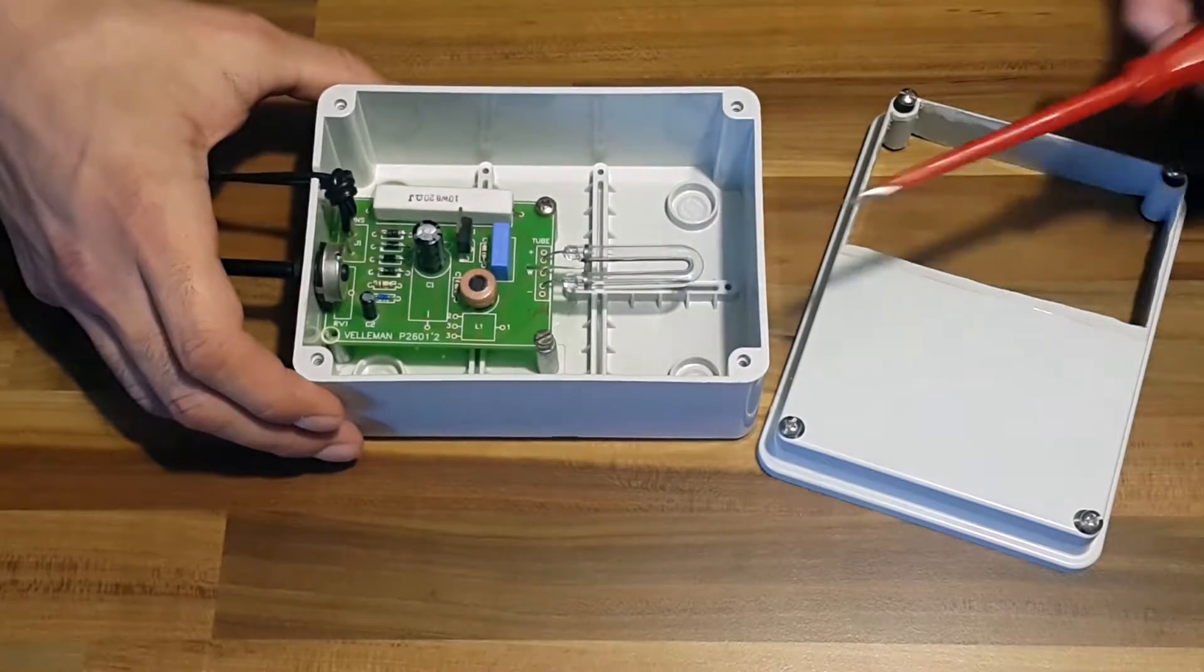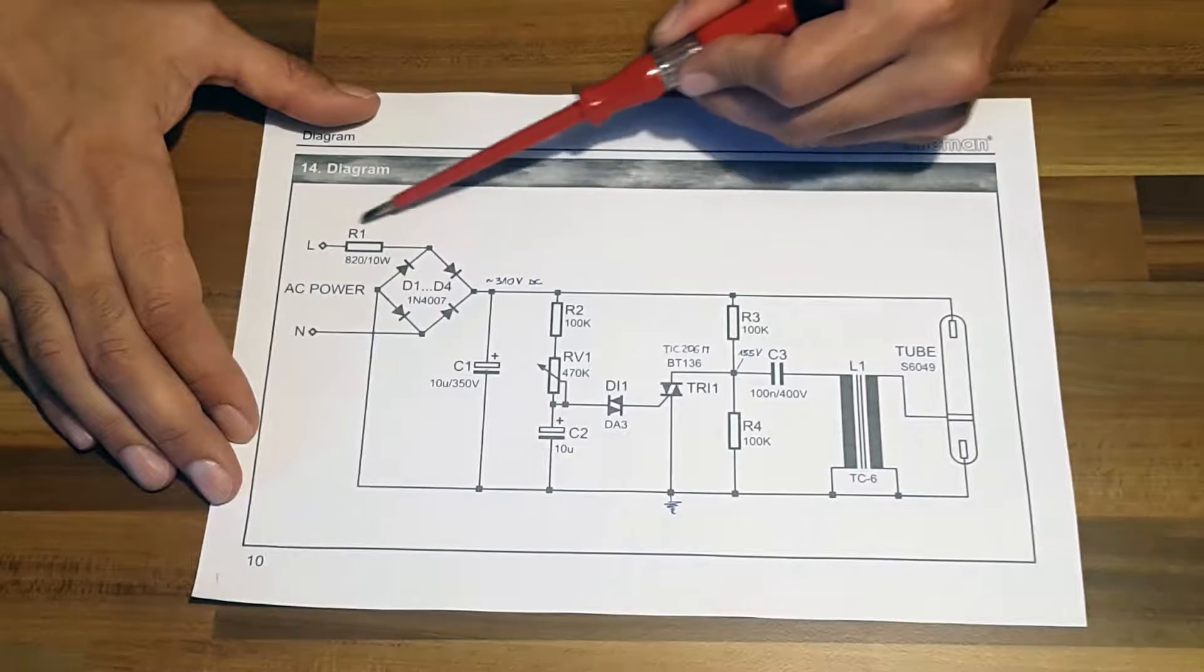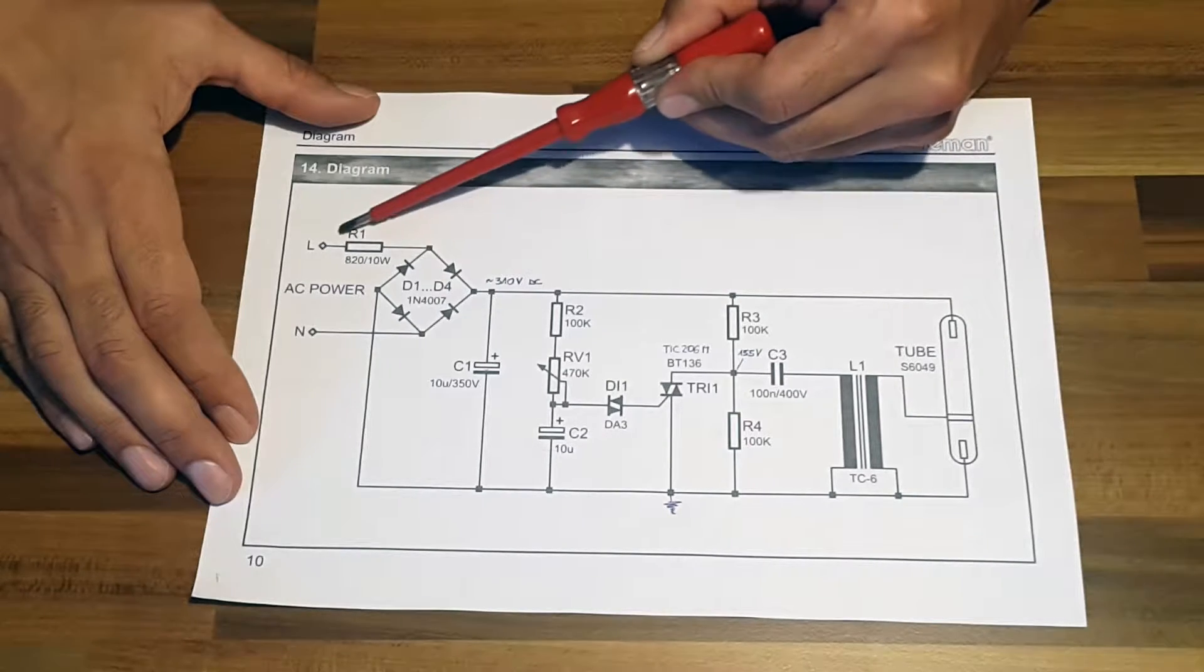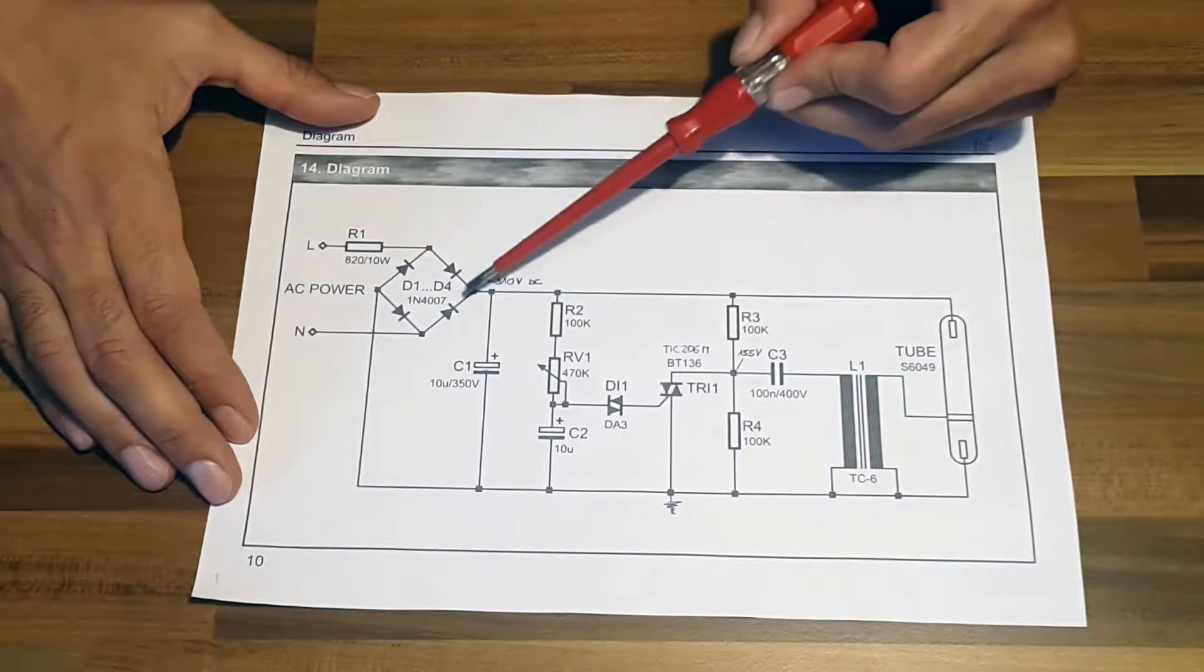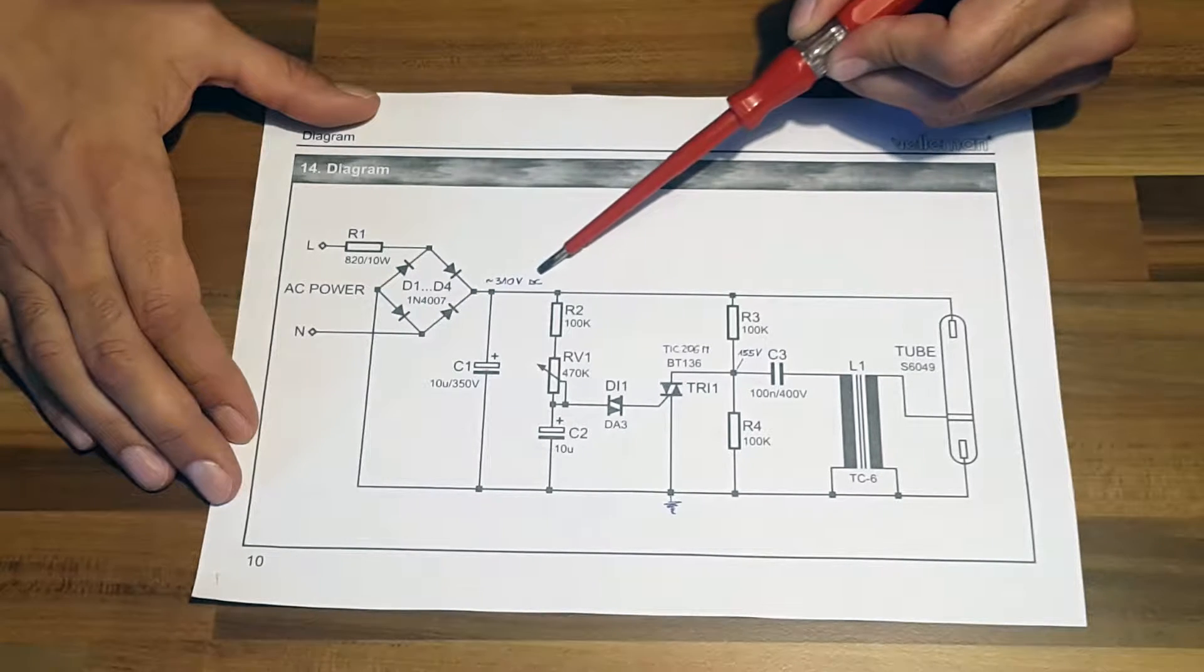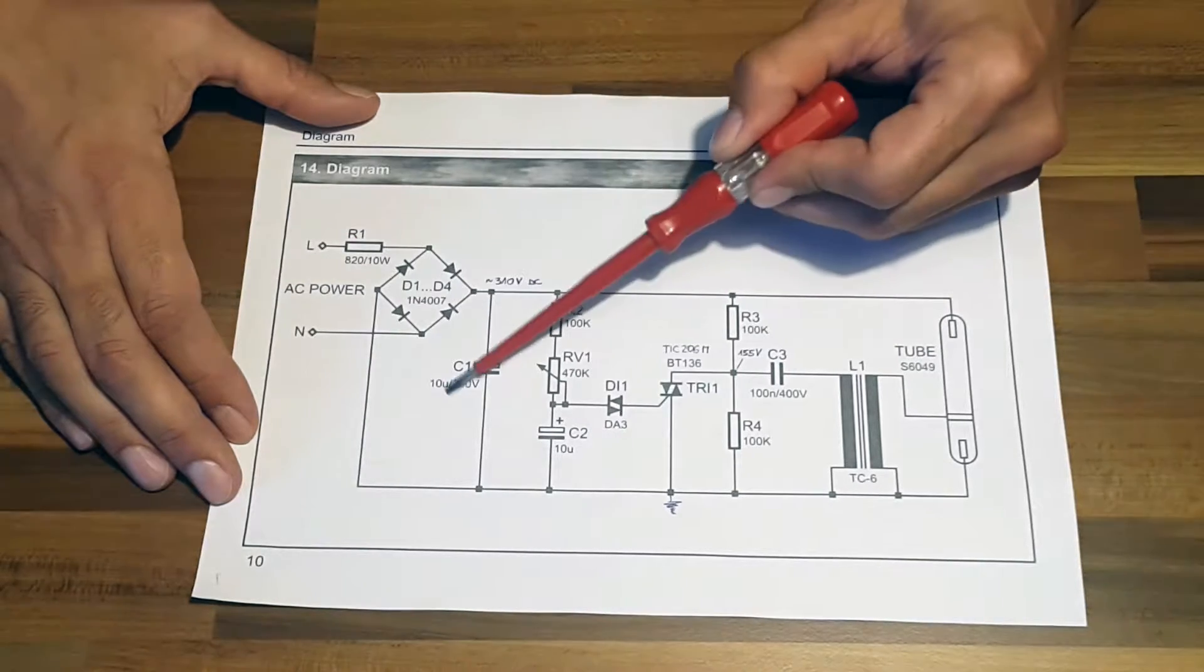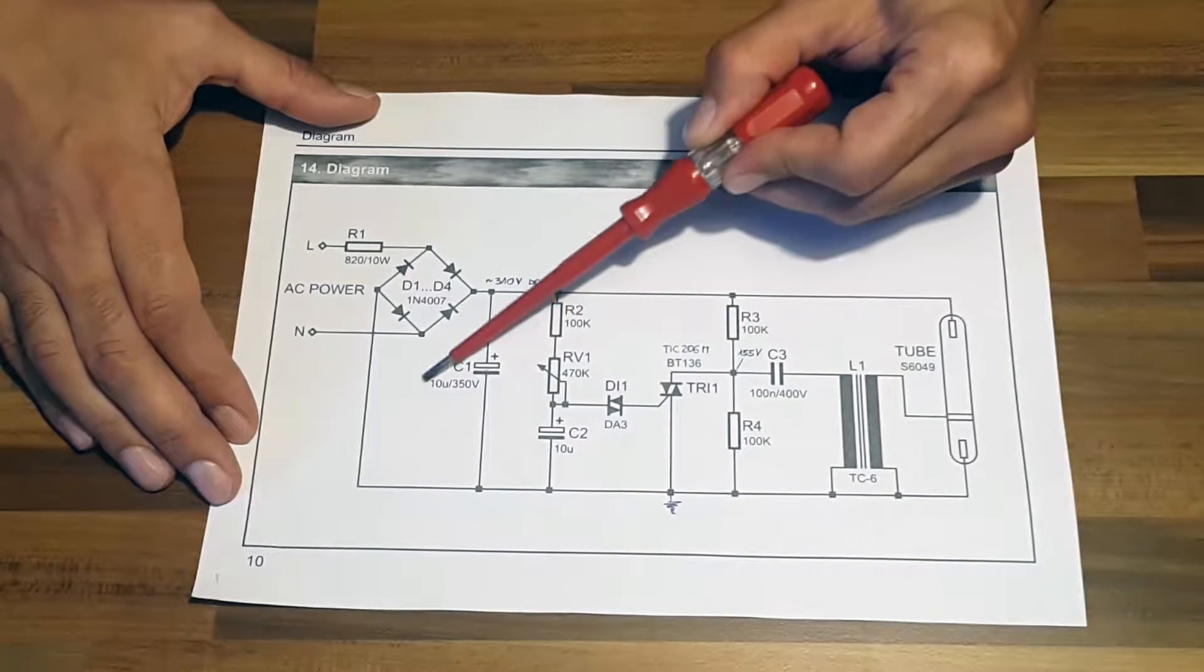As you can see, there is a current limiting resistor R1. There are four diodes which make a full bridge rectifier. So we get around 300 to 110V DC from 220V AC. C1 capacitor smooths the voltage fluctuation.